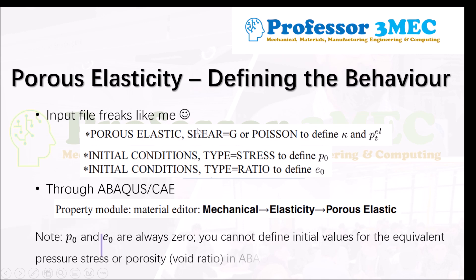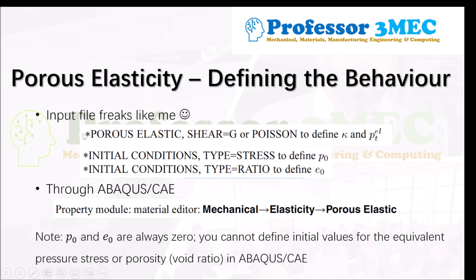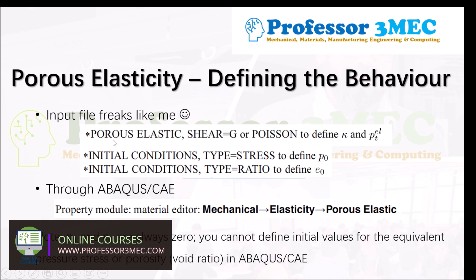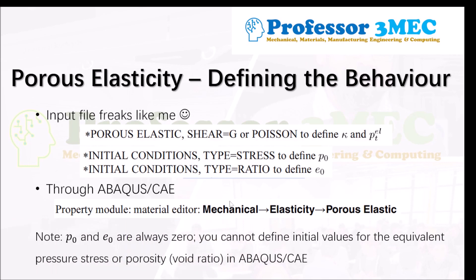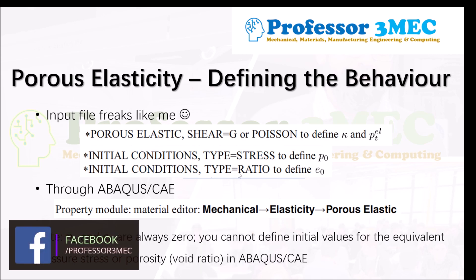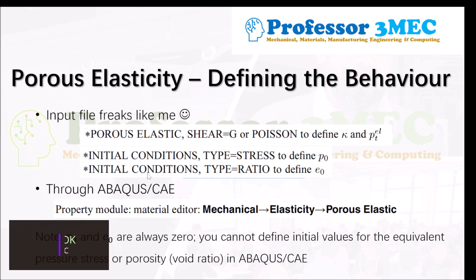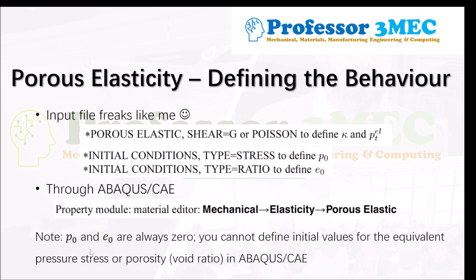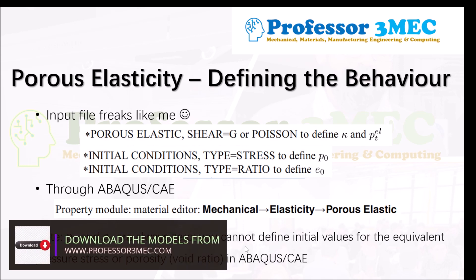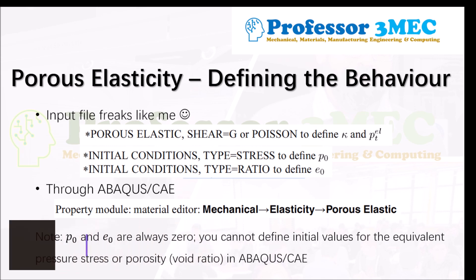For defining this model in Abaqus via the input file: in the material card you define the *POROUS ELASTIC keyword, which can have the option 'SHEAR = G' for shear modulus or Poisson's ratio. For initial pore pressure or initial void volume fraction, you use *INITIAL CONDITIONS with type STRESS to give p₀, or type RATIO to give e₀. If you don't define these, Abaqus assumes them to be zero. You can't directly define these in Abaqus CAE's property module; you have to go to the initial conditions module instead.